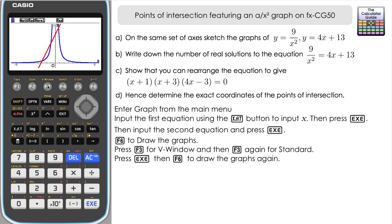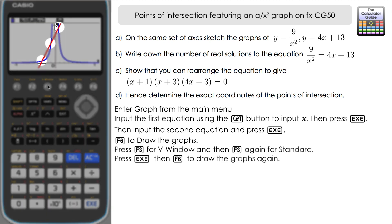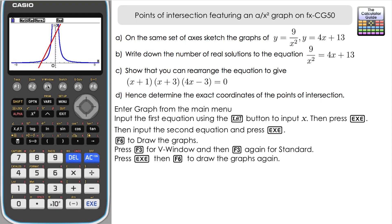Part b: write down the number of real solutions to the equation 9 over x squared equals 4x plus 13. When the graphs equal each other, those are points of intersection. You can see there are three points where the red line 4x plus 13 meets the blue graph 9 over x squared, so at those three points they're equal. Therefore there are three real solutions, because we have three points of intersection clearly visible from the graph.